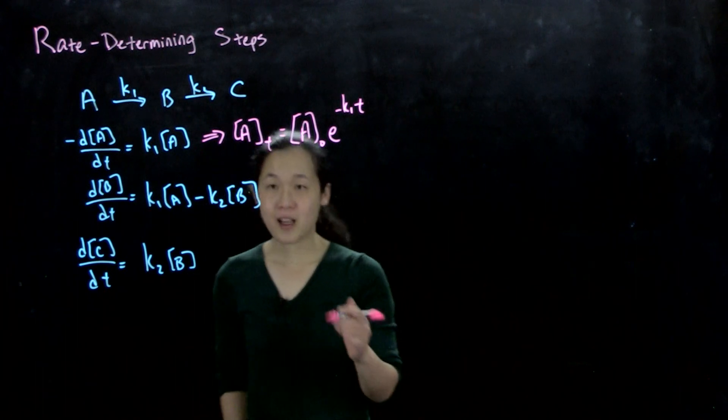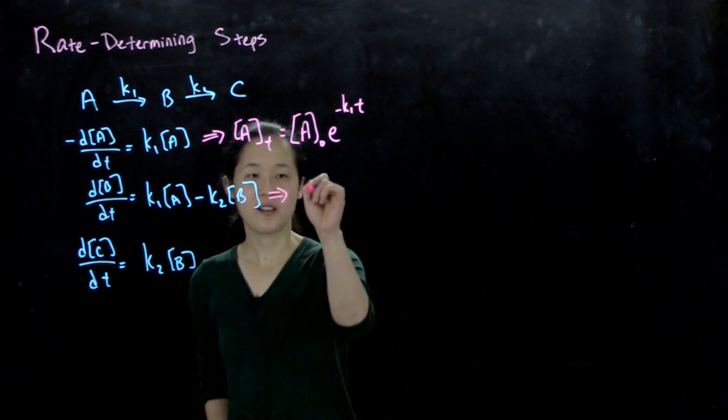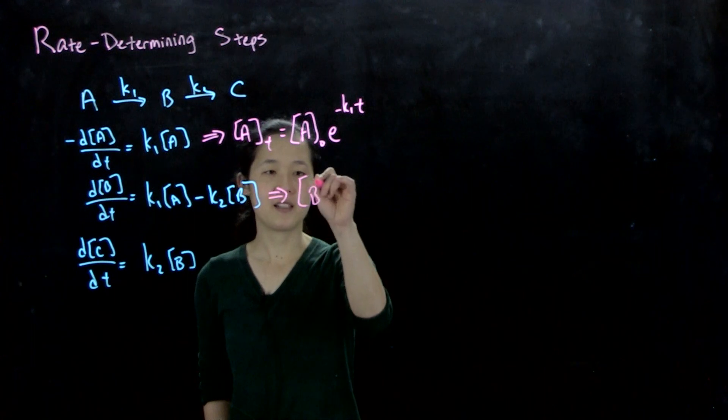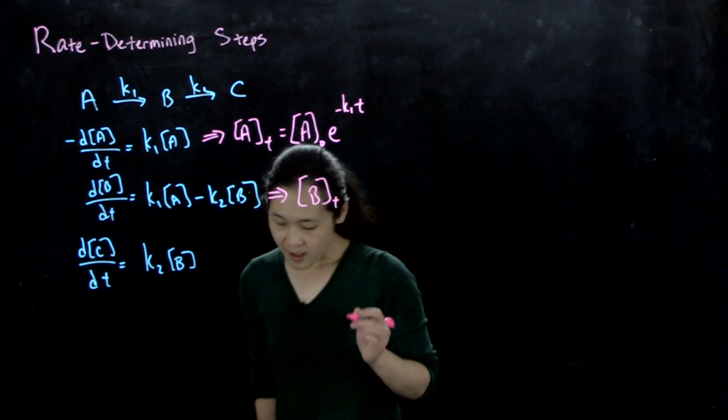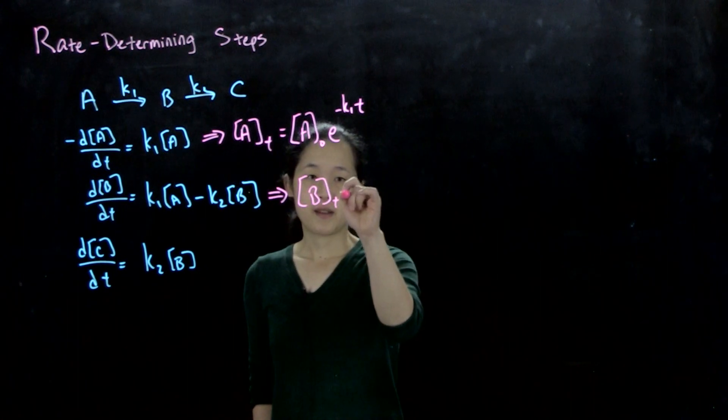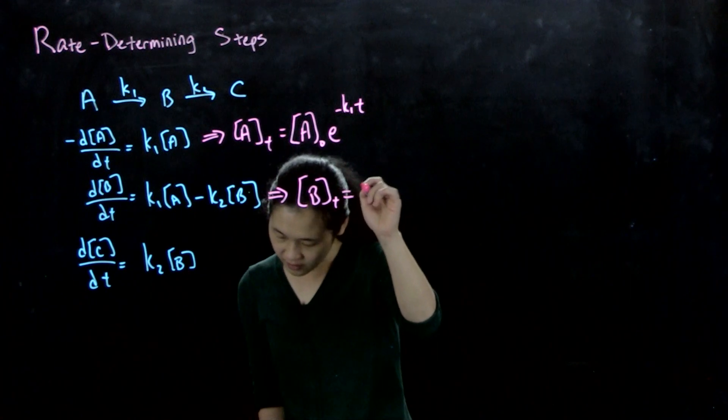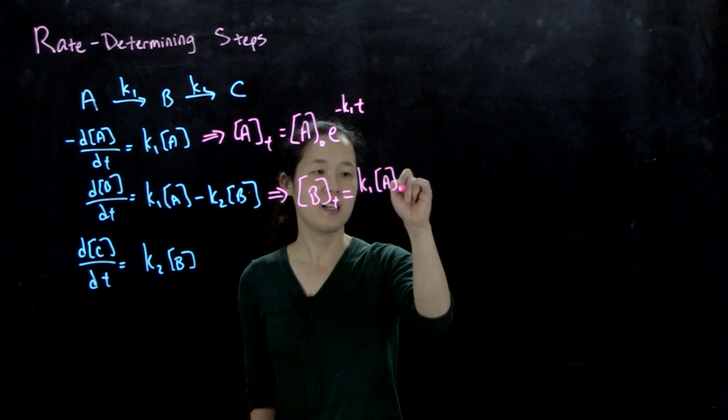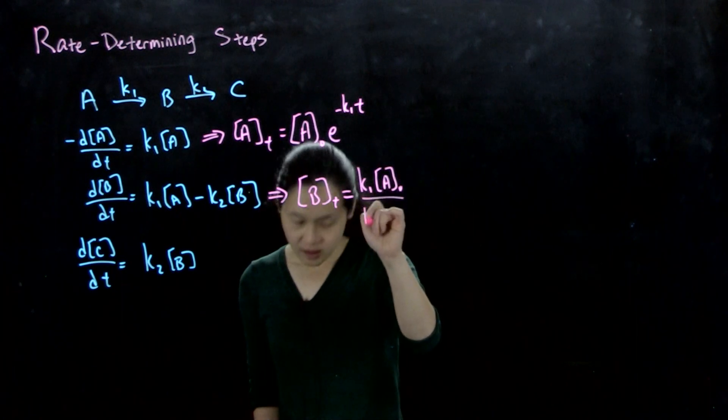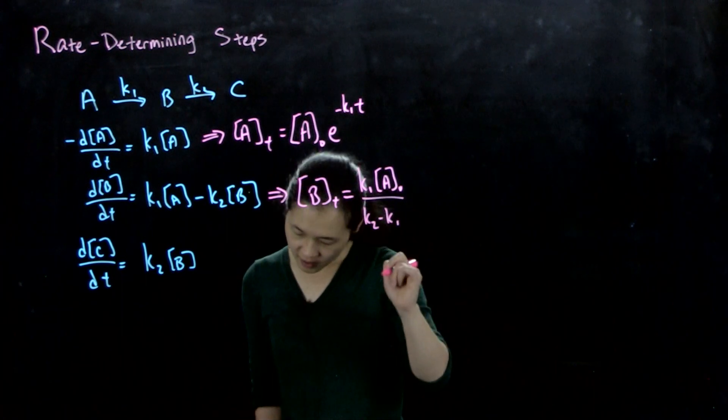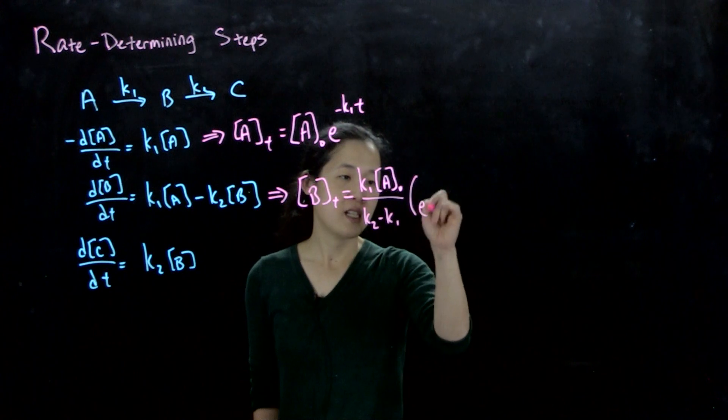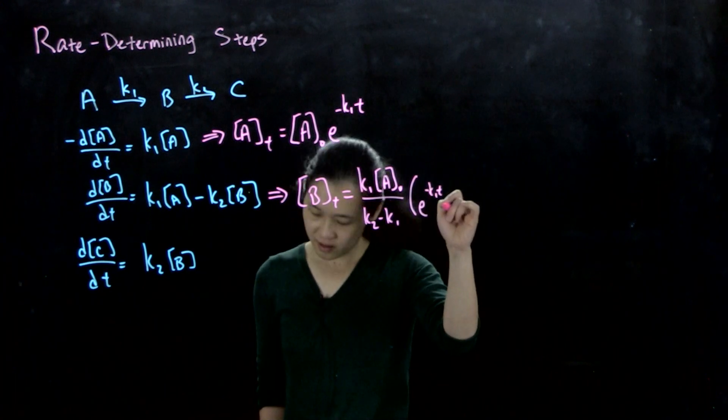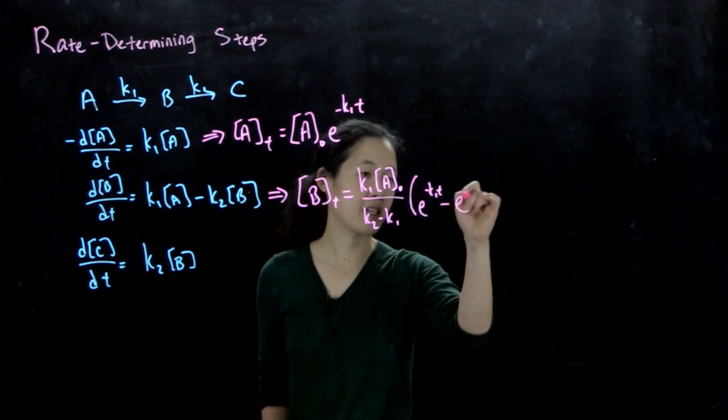So without showing the math, I'm just going to give you the answer. You probably know math way better than I do. But the concentration of B over time is going to be equal to k1[A]₀/(k2 - k1) times (e^(-k1t) - e^(-k2t)).